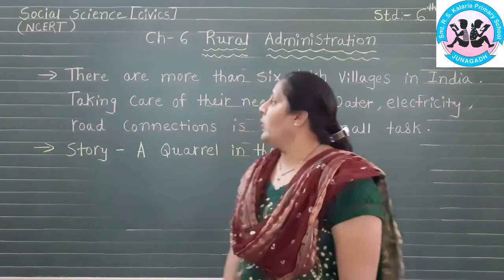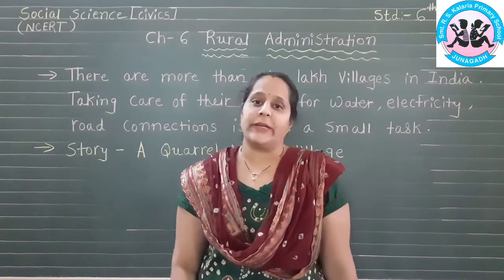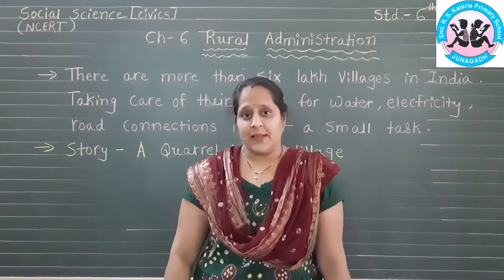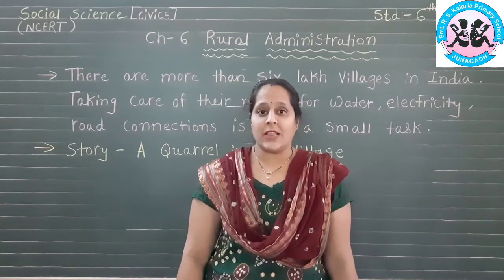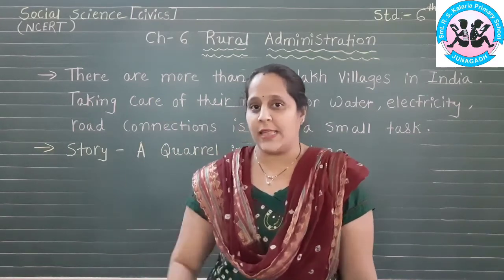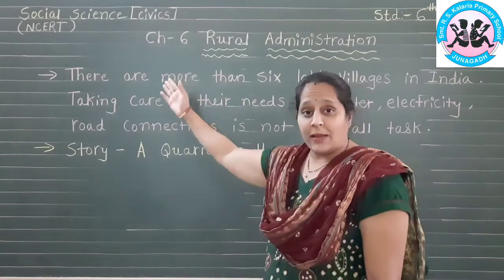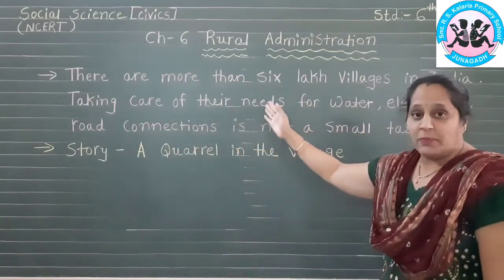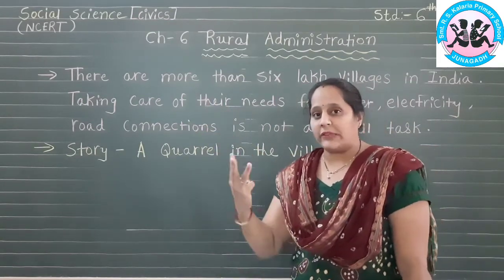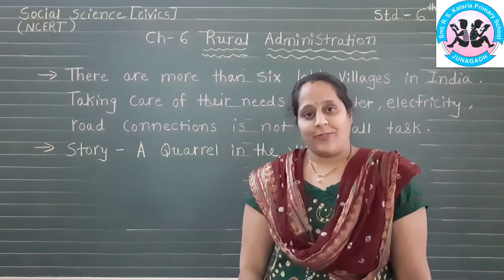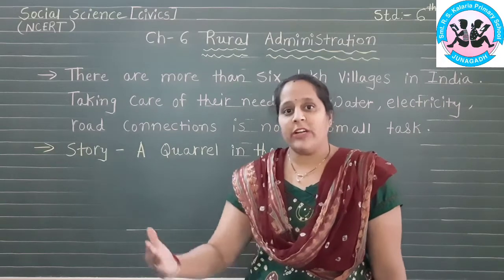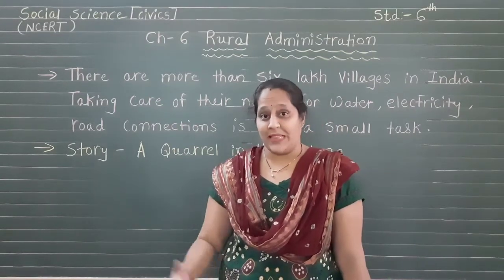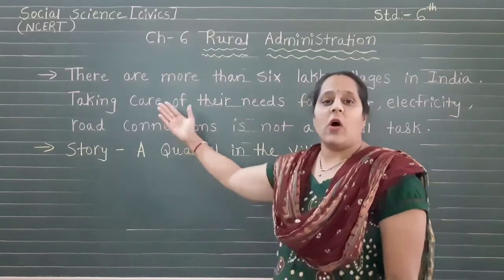In detail we study about rural administration. India is a democratic country and around 60 to 70 percent of people are involved in farming and agriculture. Rural means a village area. There are more than six lakh villages in India. We already studied about the three levels of panchayat: gram panchayat at the village level, panchayat samiti at the taluka level, and district panchayat at the zila level.